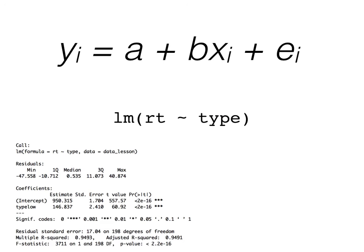Looking at the summary of the model, we get the rest of the values in our equation. The intercept here is roughly 950 milliseconds, which means the value of our default level, or high proficiency, is 950 milliseconds. And looking at the estimate of our x value, type, shows us the difference between levels is roughly 147 milliseconds.